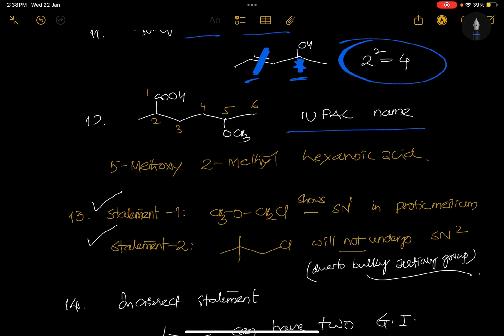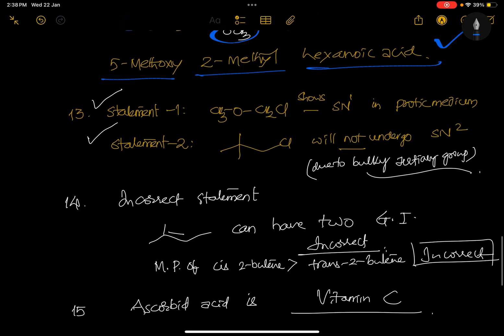IUPAC name of this compound is asked. Start from COOH, and this is second place methyl we have, fifth place methoxy we have. Methoxy comes first: 5-methoxy-2-methyl hexanoic acid. Again, easy question.